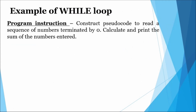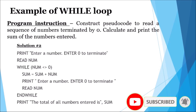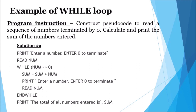Example of while loop: the following problem statement requires a pseudocode to read a sequence of numbers terminated by the value zero. The algorithm is then required to calculate and display the sum of the values entered. The solution shows a prompt and input statement used to accept the first value. The while loop header contains the while keyword and the condition 'num not equal to zero'. This condition determines whether the loop continues or is terminated. Each time a loop is executed, a prompt and input statement accepts a new value. Once the value 0 is entered, the keyword 'end while' indicates the termination point of the loop. The solution then ends through the display of the sum of the values entered.